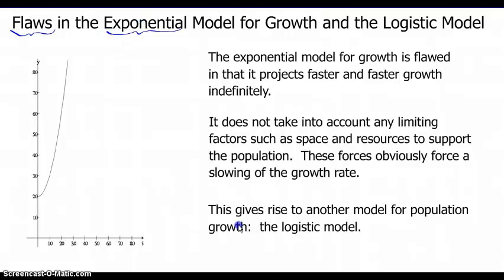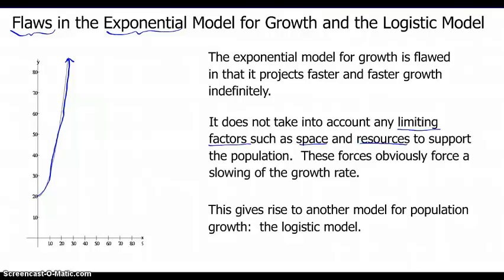The exponential model for growth is flawed in that it projects faster and faster growth indefinitely. It's like whatever population we're talking about is just going to grow forever. It doesn't take into account any limiting factors that might be present, such as space or resources to support the population's unchecked growth.